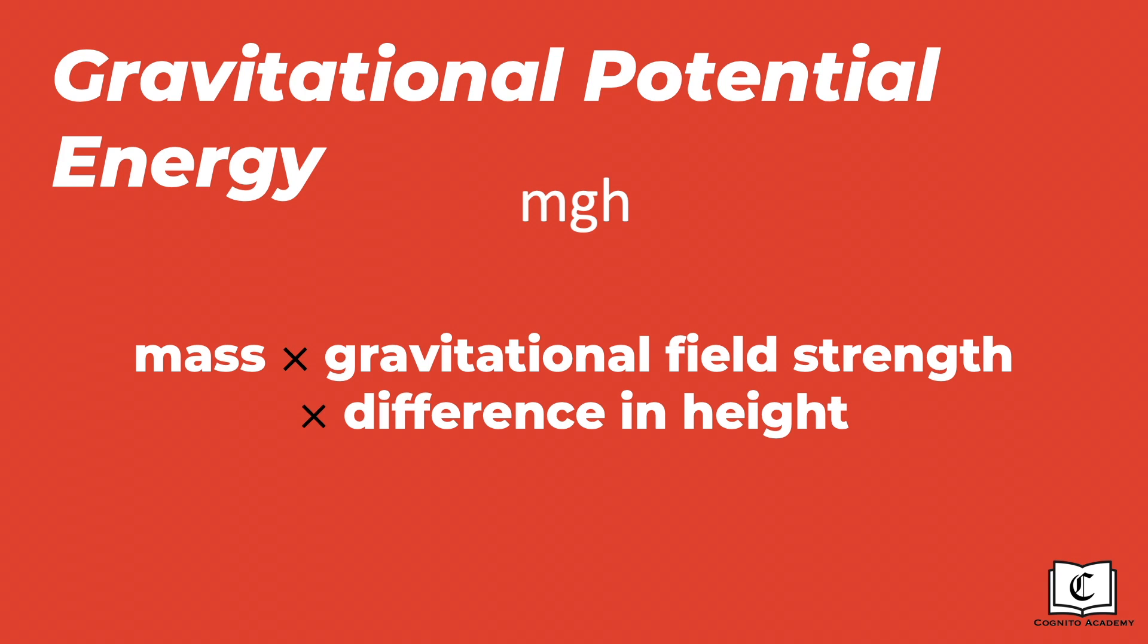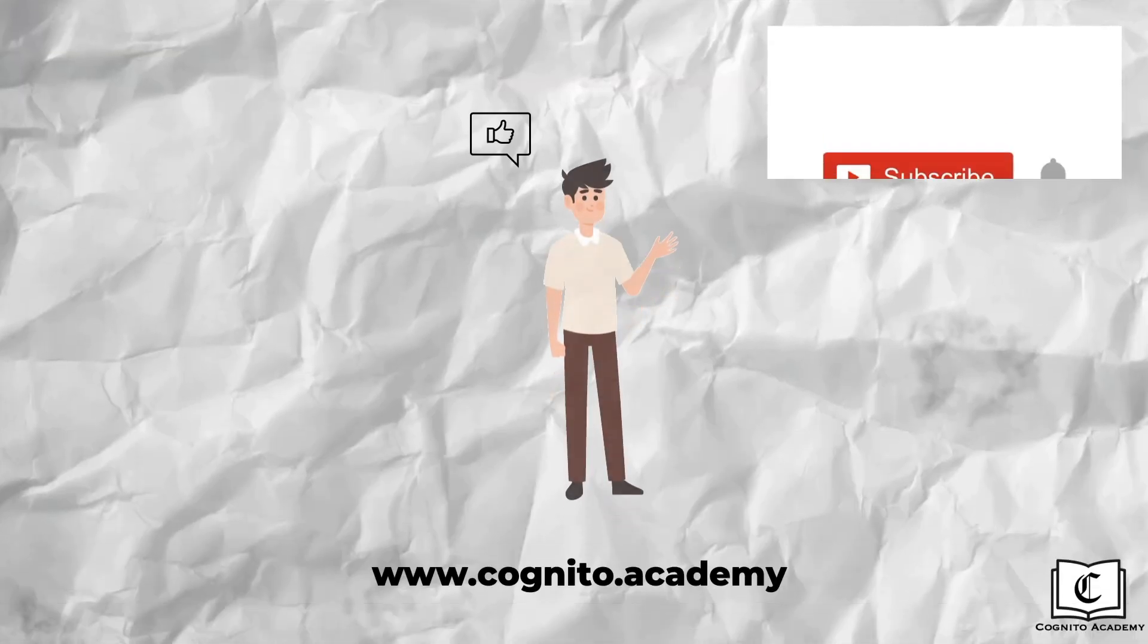Do take note that the gravitational potential energy here is relative, meaning when you calculate gravitational potential energy, it is always relative to a certain height. This draws out our video on work energy power part 1.